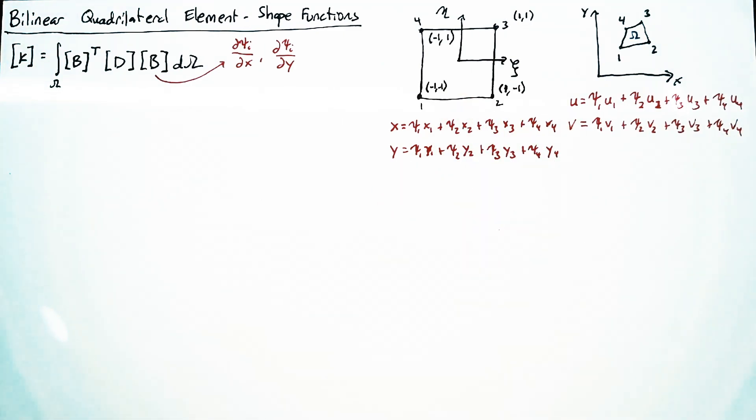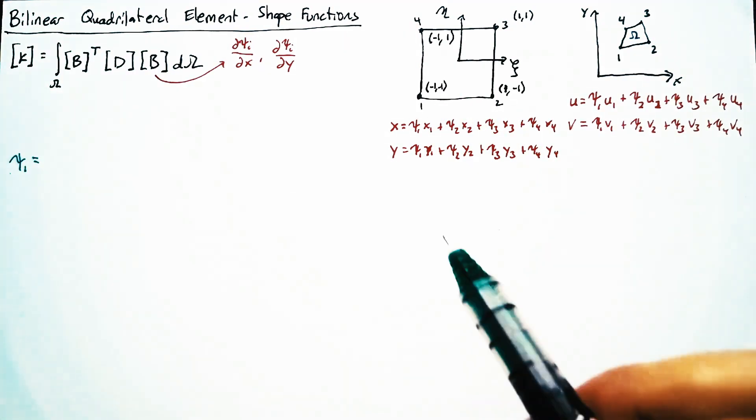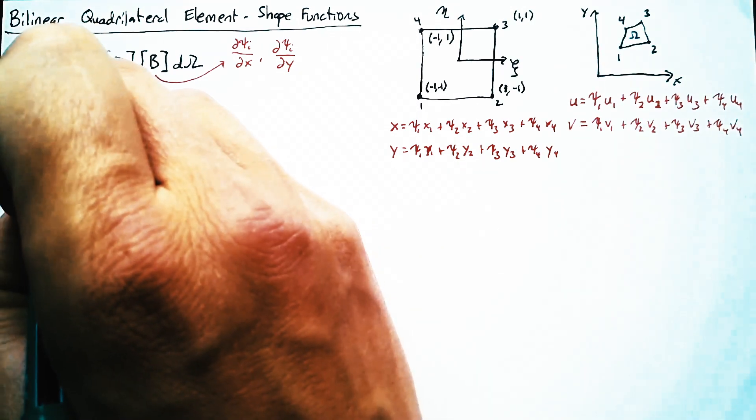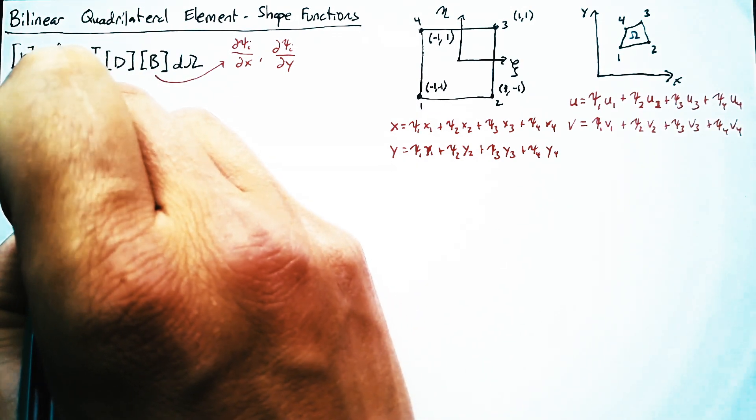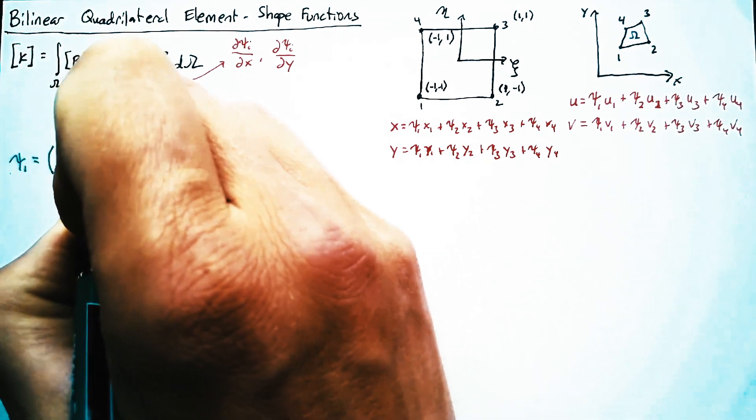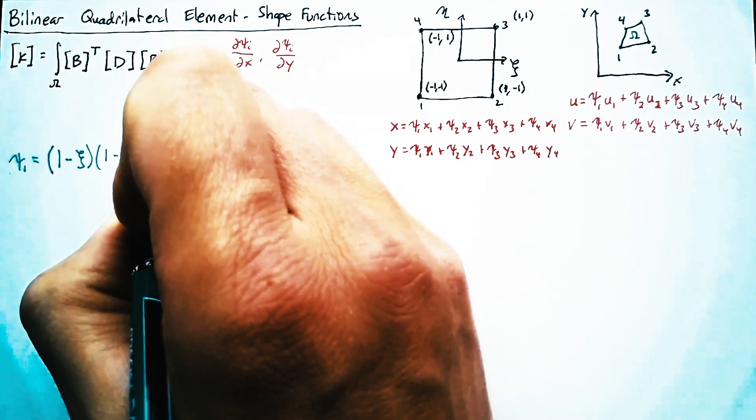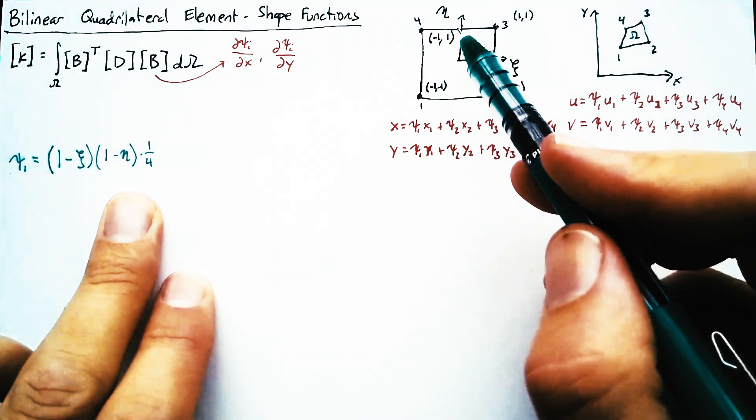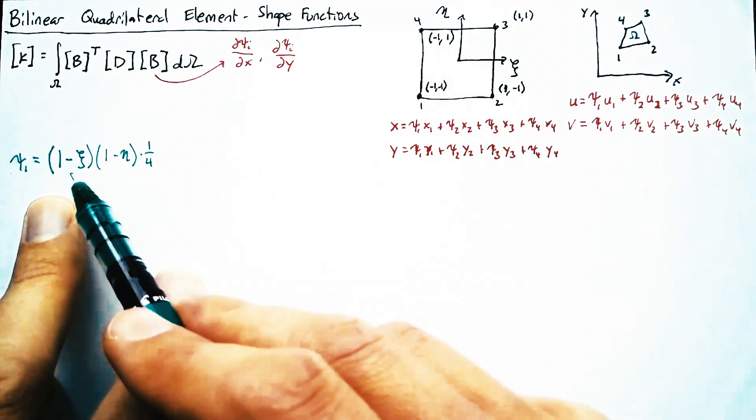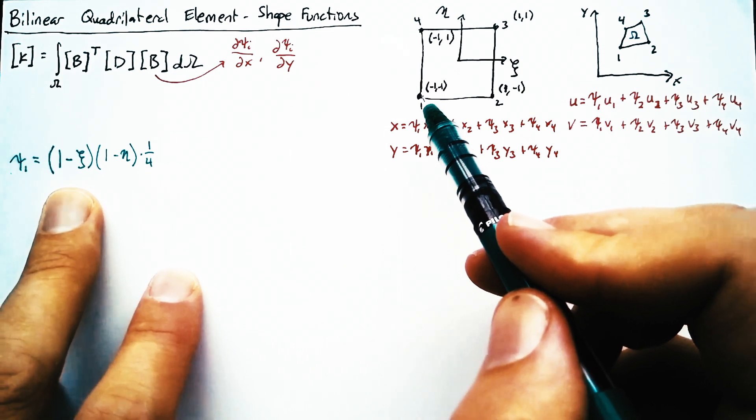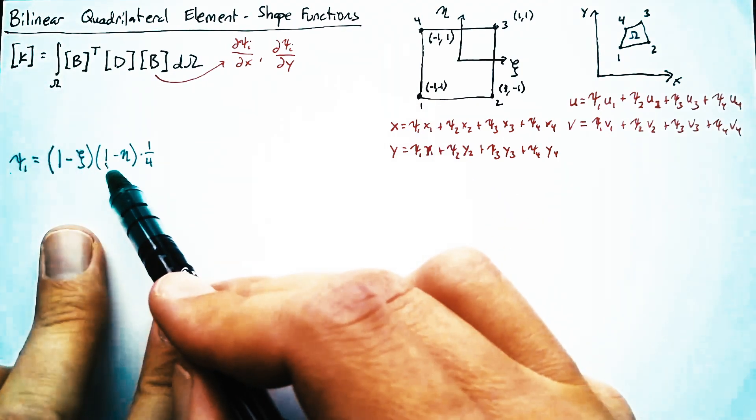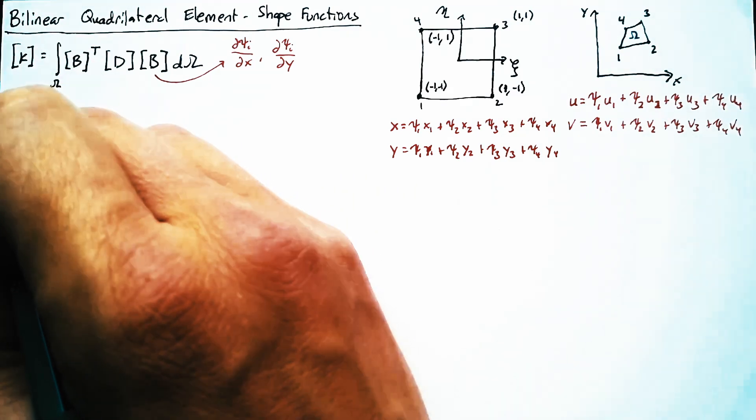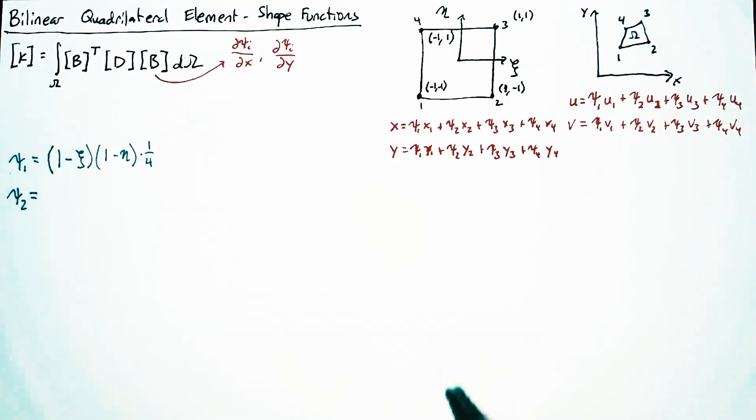So using this shape, let's go define these shape functions. Psi 1 is going to be defined so that it is equal to 1 on node 1 and 0 on the other three nodes. And the way we can do that is by defining it as 1 minus xi, 1 minus eta, multiplied by 1 over 4. And so in this case, if either xi or eta is equal to positive 1, then the value is going to be 0. And only when both xi and eta are equal to negative 1 do we get a non-zero value. And it turns out that that value is 4. And so we divide by 4 in order to make the value equal to 1 at the node.